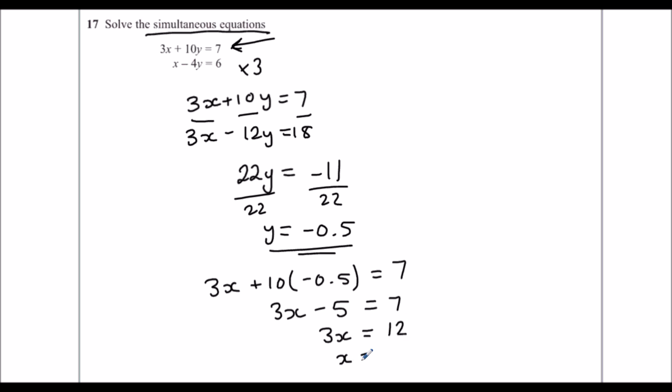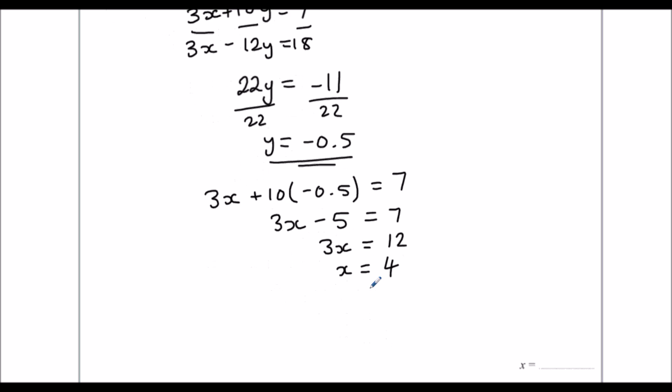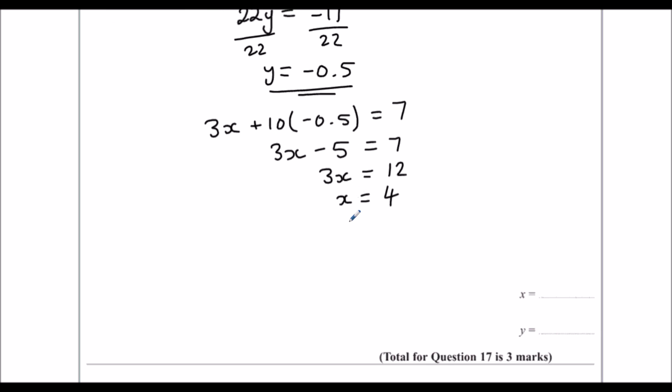3x is 12. Divide both sides by 3. x is 4. So x is 4 and y is minus 0.5.